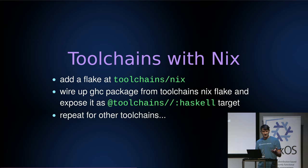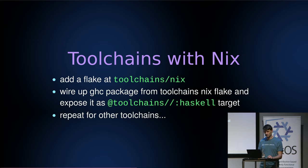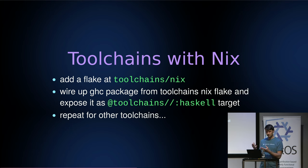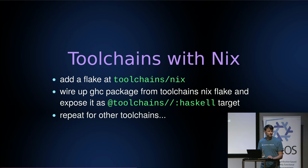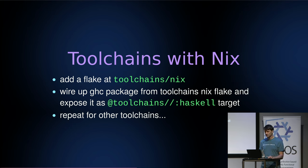When working with Nix in this regard, we want to provide those toolchains with Nix. Our current project uses a separate toolchains flake — we add a flake to the toolchains/nix directory. We extract the GHC package from the toolchains Nix flake and expose it inside of the toolchains Haskell target, and similarly for the other toolchains. But toolchains are not the only thing — at the end of the day these are just binaries, and we also need some packages.